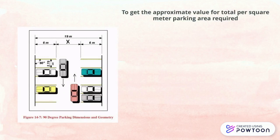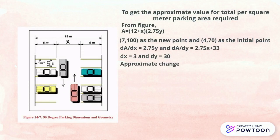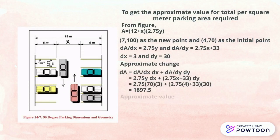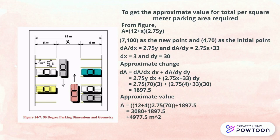For the calculation to get the approximate value for total per square meter parking area required, we must first look for the approximate change. In order to get the approximate change, we assume that 7,100 as the new point of the limit measurement and 4,700 as the initial point, which is the minimum measurement.